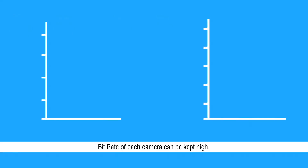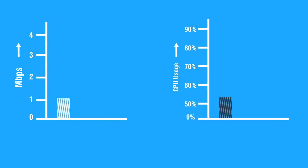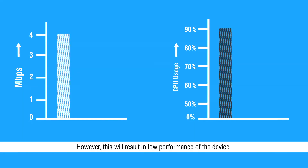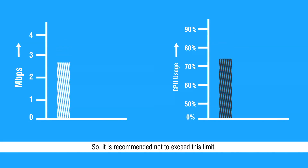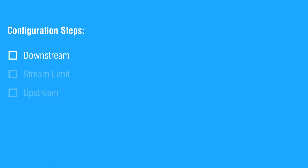Bitrate of each camera can be kept high; however, this will result in low performance of the device. So it is recommended not to exceed this limit. This completes the understanding about downstream.